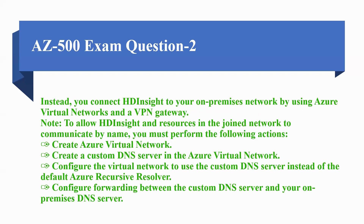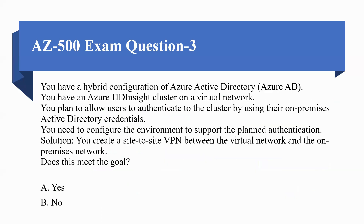To allow HDInsight and resources in the joined network to communicate by name, you must perform the following actions: first, create an Azure Virtual Network; second, create a custom DNS server in the Azure Virtual Network; third, configure the virtual network to use the custom DNS server instead of the default Azure recursive resolver; and configure forwarding between the custom DNS server and your on-premises DNS server.